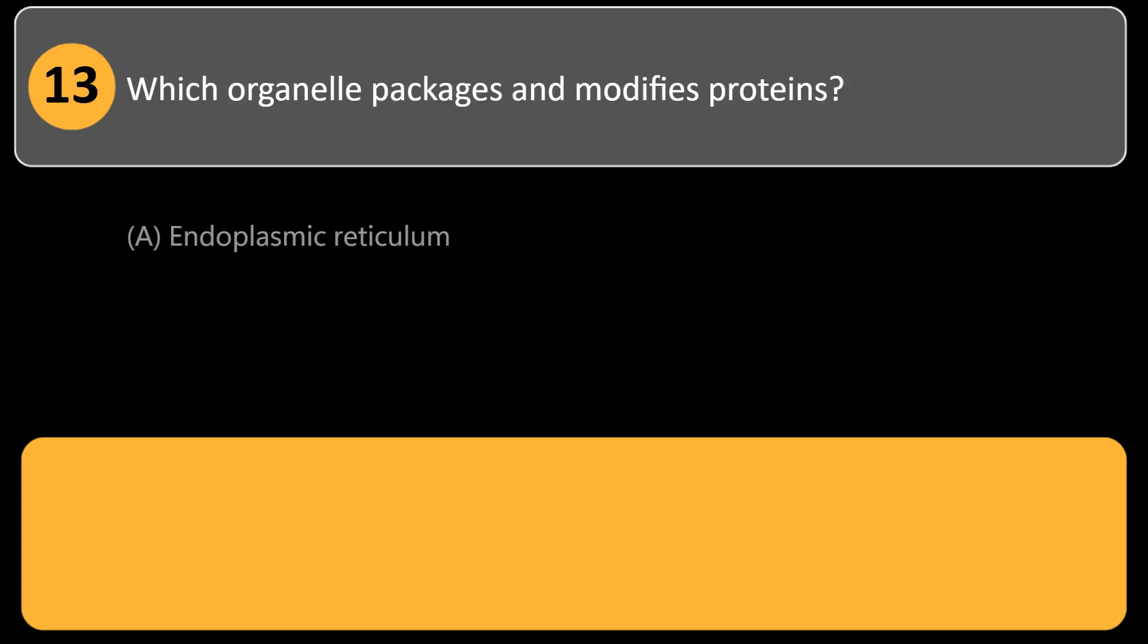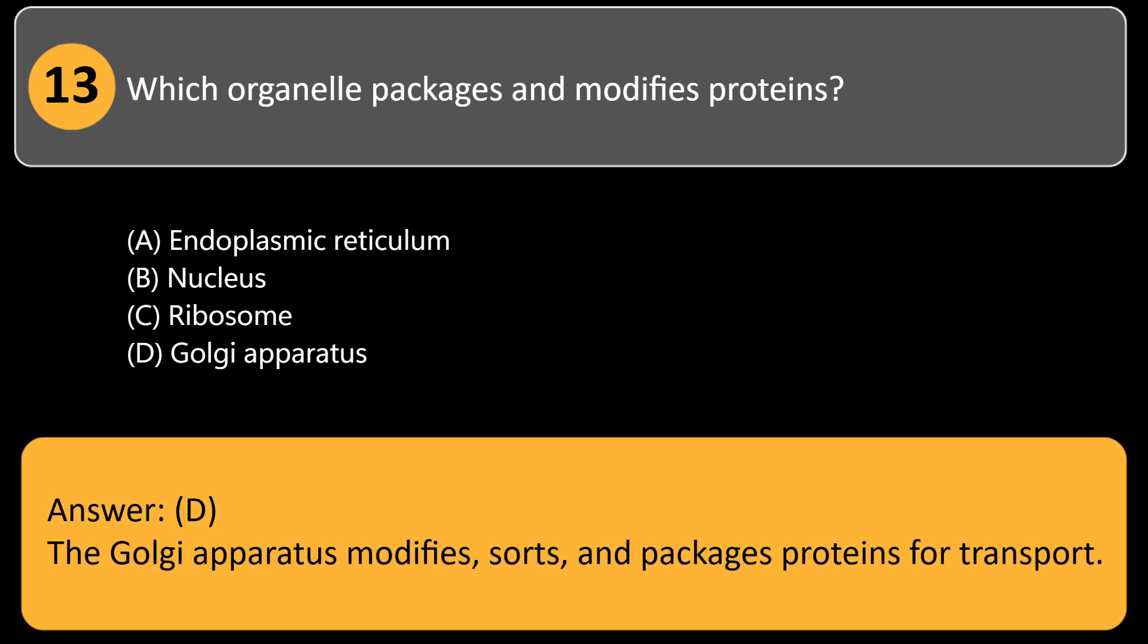Which organelle packages and modifies proteins? A. Endoplasmic reticulum, B. Nucleus, C. Ribosome, D. Golgi apparatus. Answer: D. The Golgi apparatus modifies, sorts, and packages proteins for transport.